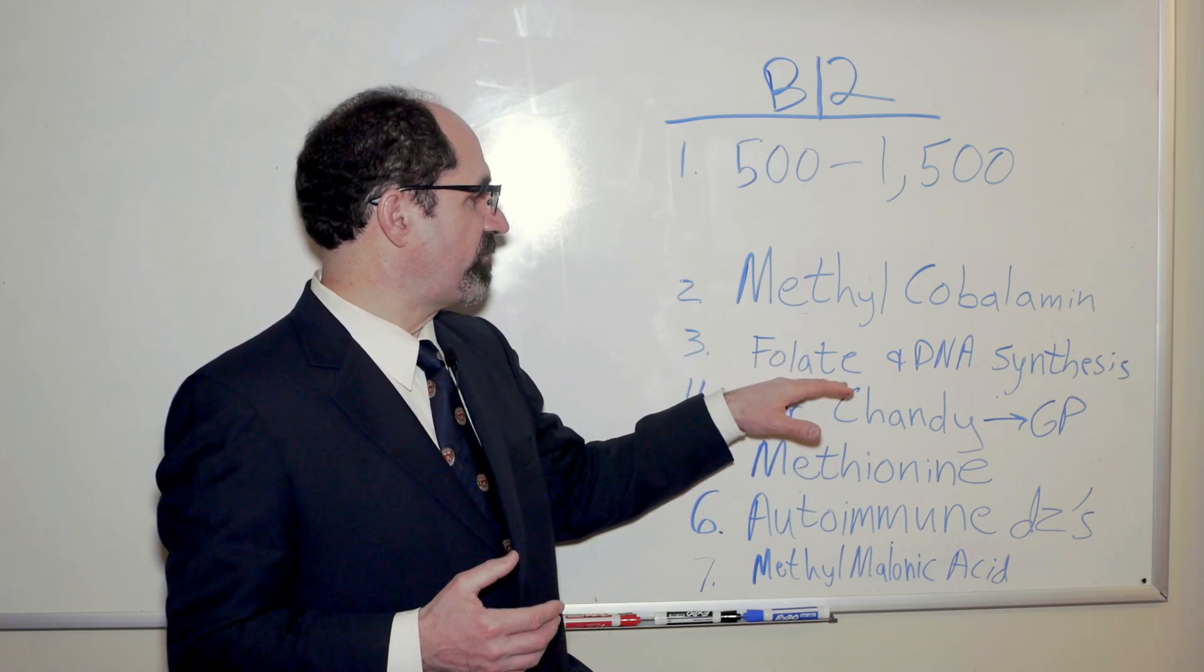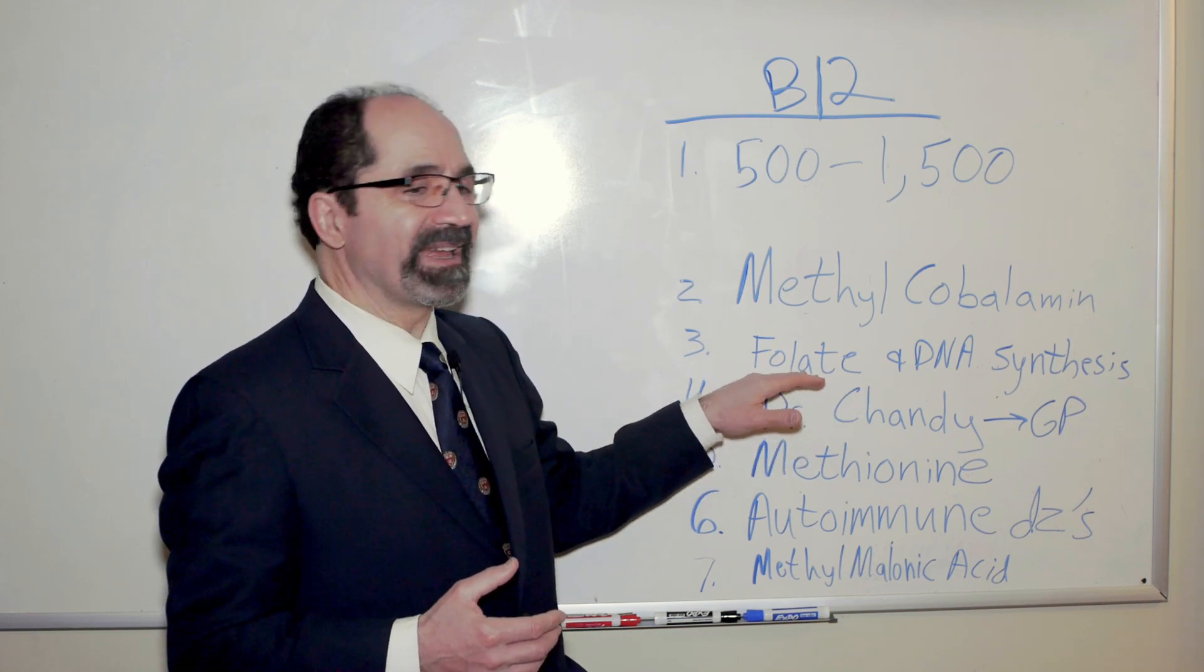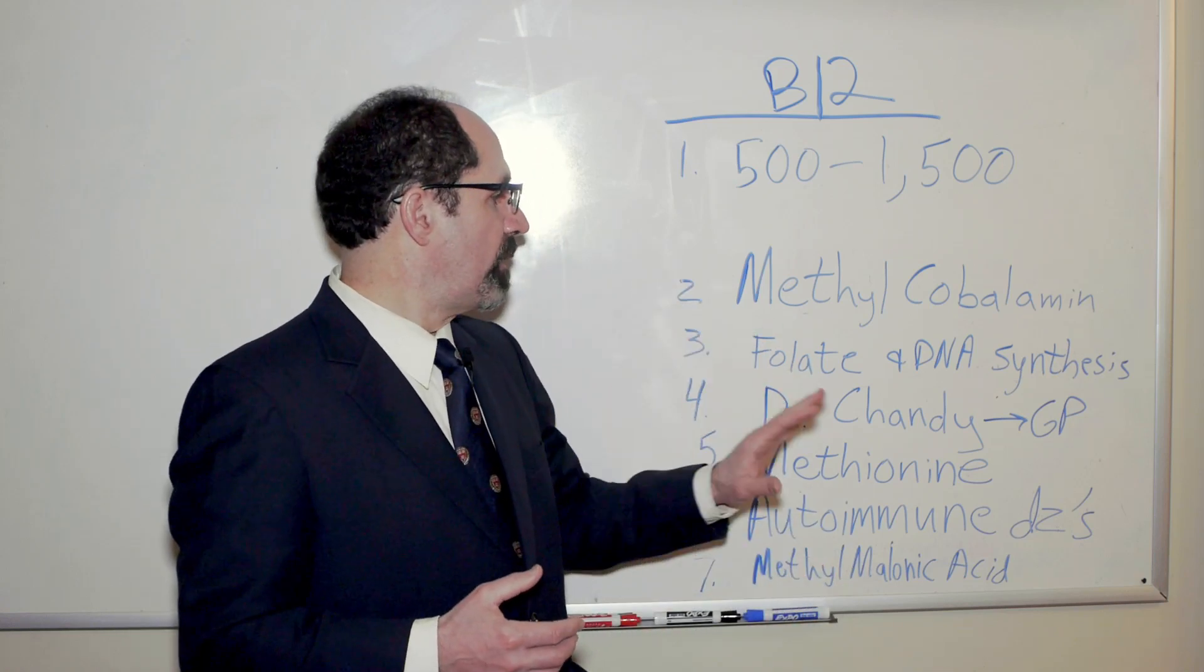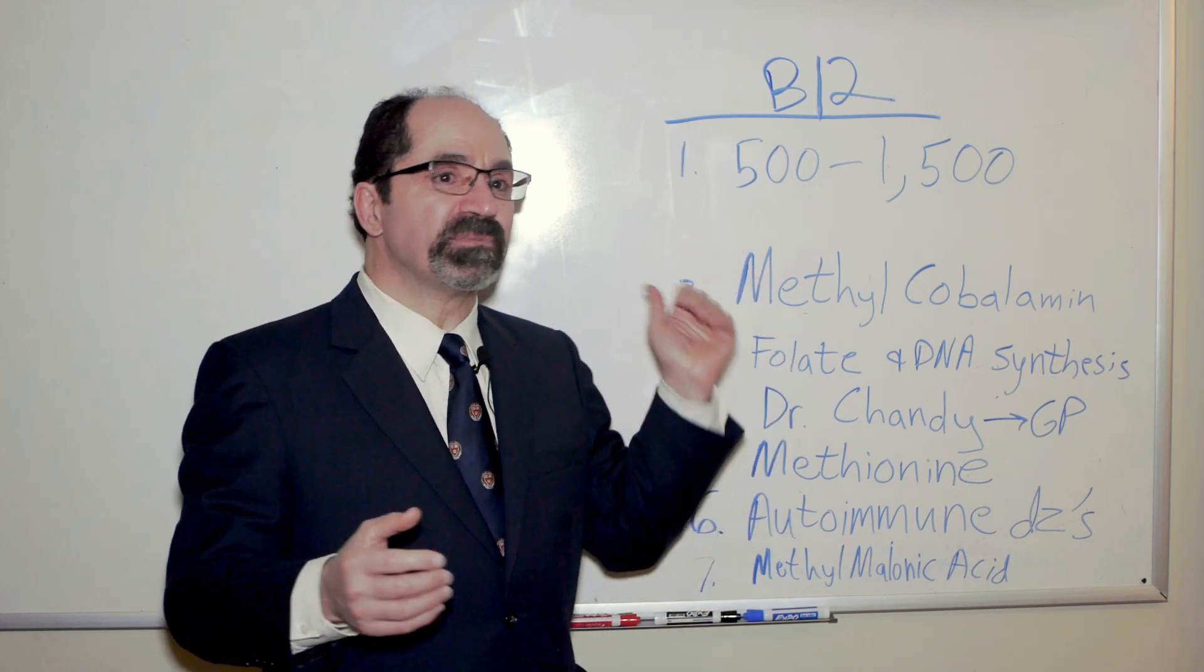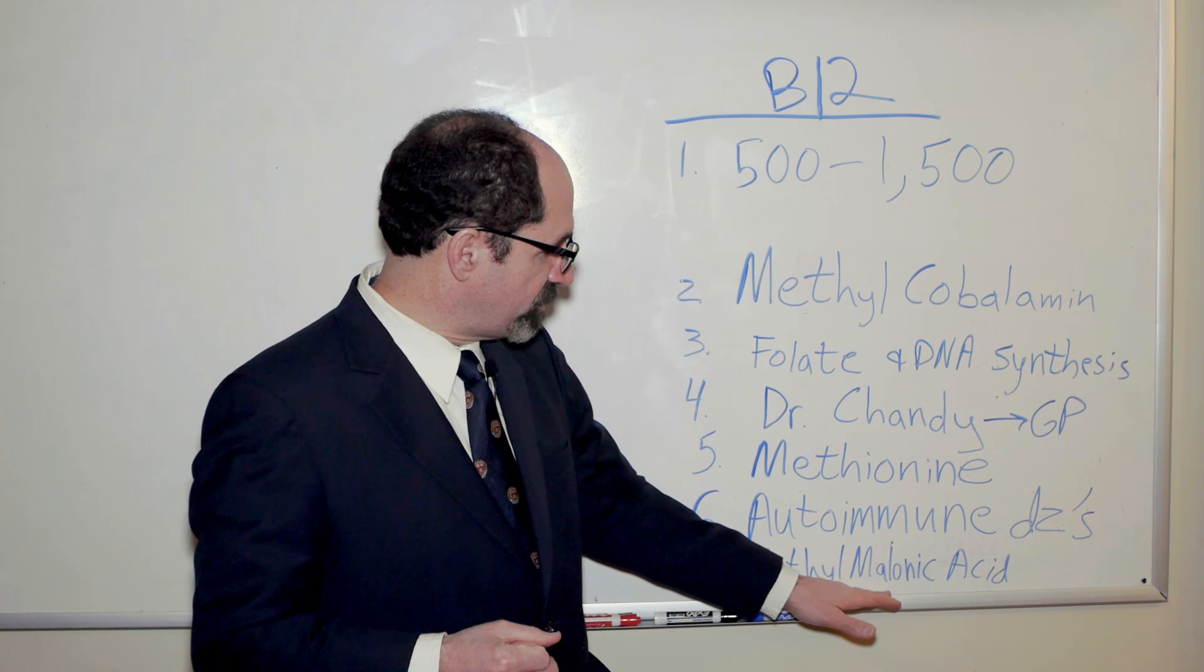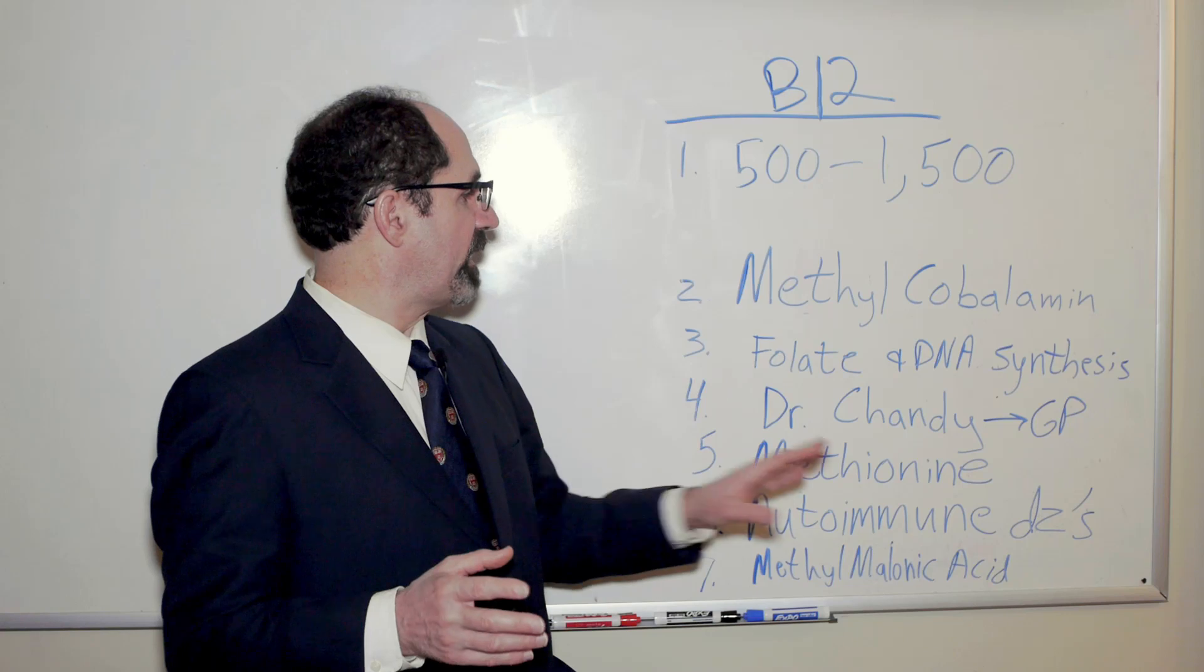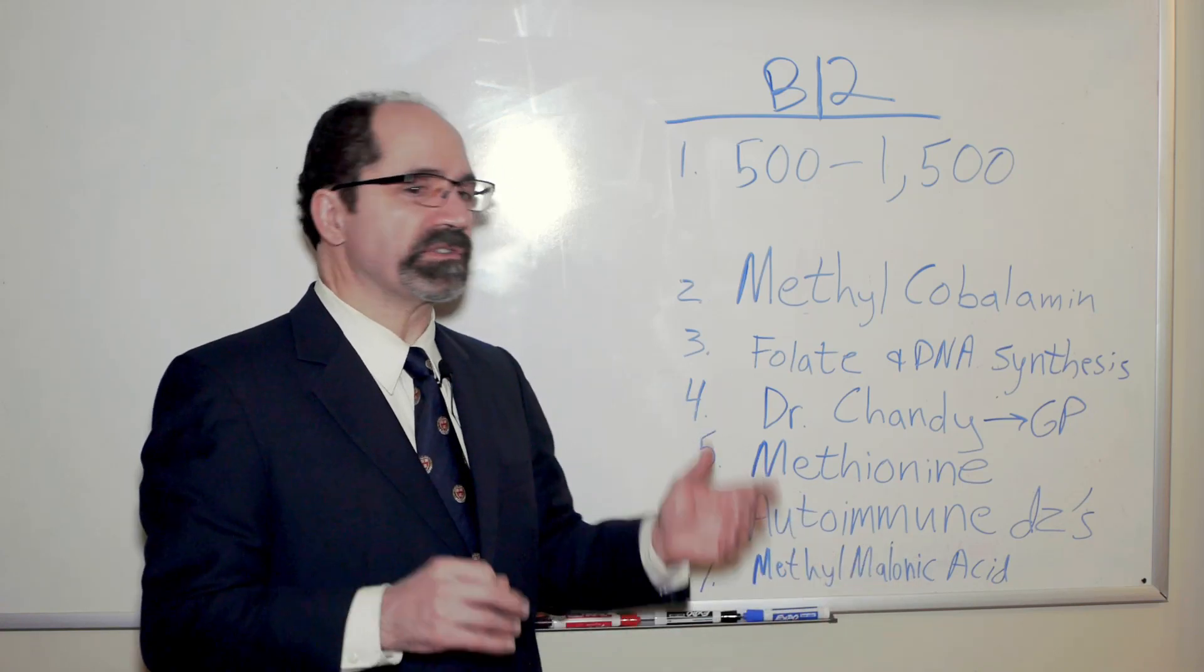Sometimes a person will be taking a folate supplement and they can overcome the B12 component of deficiency related to folate and it can mask a B12 deficiency. So the point is, be aware of that. You could have normal size red blood cells, no macrocytosis, but still have a B12 deficiency. In that case, you can check a methylmalonic acid, which will start to accumulate in that context with a B12 deficiency. That's one way to ferret out a subtle B12 deficiency without macrocytosis.